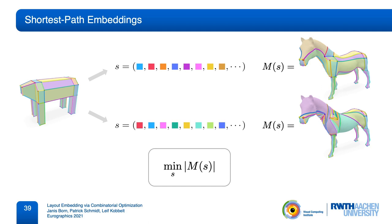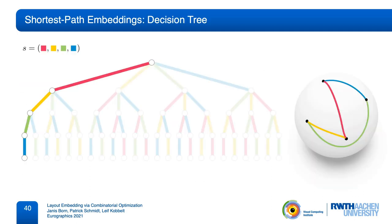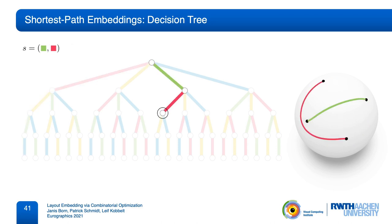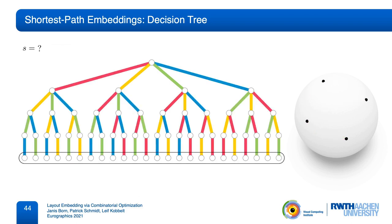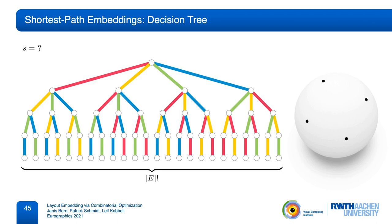To solve this problem, it is useful to look at a structure that relates all possible insertion sequences. Every insertion sequence can be seen as a path in a decision tree that describes the incremental construction of shortest path embeddings. The inner nodes of this tree represent intermediate partial embeddings and each tree edge is an insertion decision. Each leaf node is a completed shortest path embedding and the corresponding path in the tree is its insertion sequence. The problem is now to find the leaf node that represents the shortest embedding. This is difficult because the tree is so large. The number of leaf nodes is factorial in the number of layout edges. So already for small layouts, an exhaustive search is infeasible.